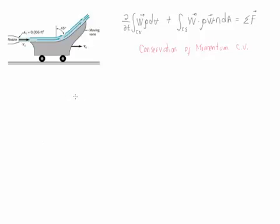The first step is for us to identify the control volume for the problem. We are going to use the area that goes from the nozzle, around the surface of the vane, and then simply across — this is going to be our control volume. We have two control surfaces: one at the entrance and the other one at the exit.